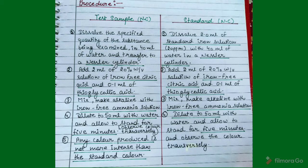For the test solution, first dissolve the specified quantity of the substance being examined in 40 ml of water and transfer to a nessler cylinder. Then add 2 ml of 20% weight by volume solution of iron-free citric acid and 0.1 ml of thioglycolic acid. Then make the solution alkaline with iron-free ammonia solution.